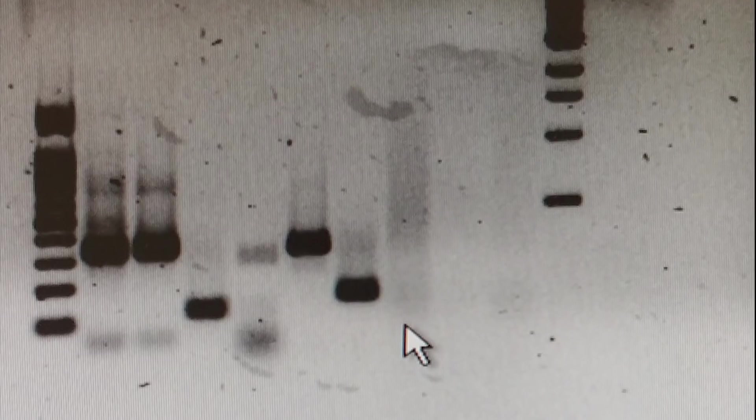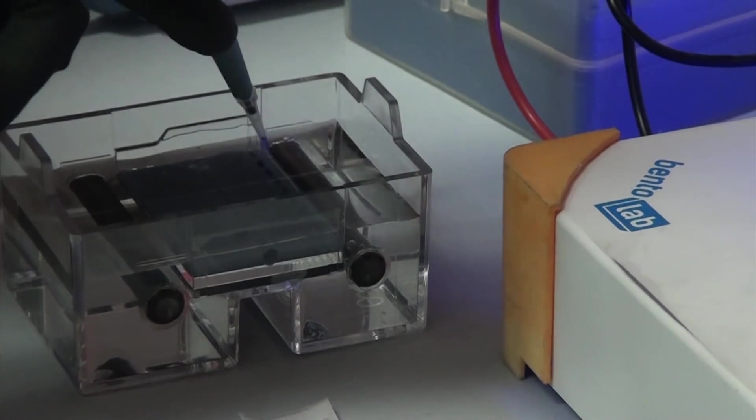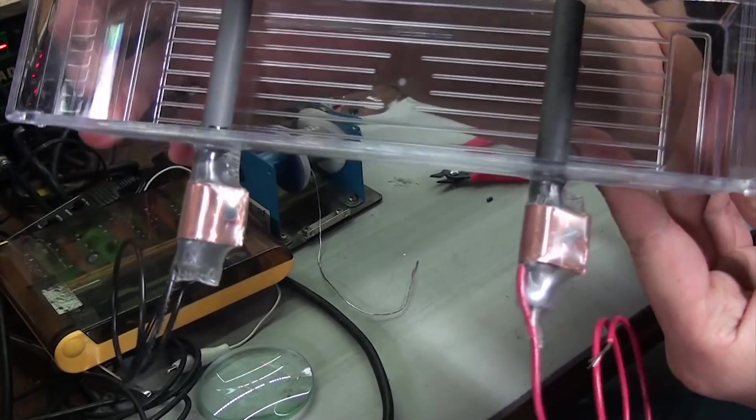This can tell you all sorts of stuff about the sample you're running, including if PCR reactions worked, if you've managed to isolate a particular protein, and so much more. So today we're going to take a dive into some basics of electrophoresis and how to build a gel box for super cheap.